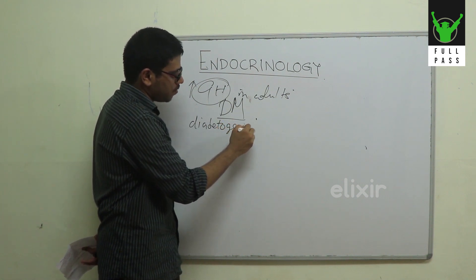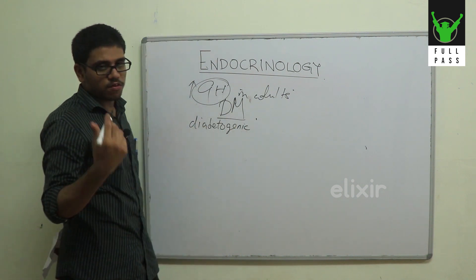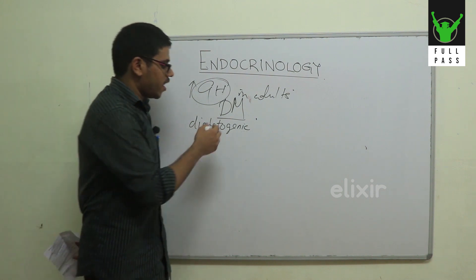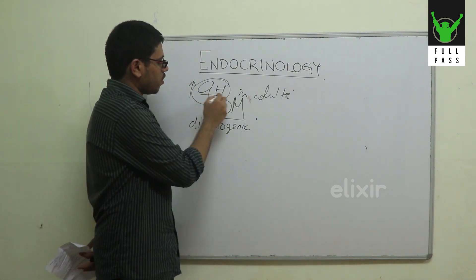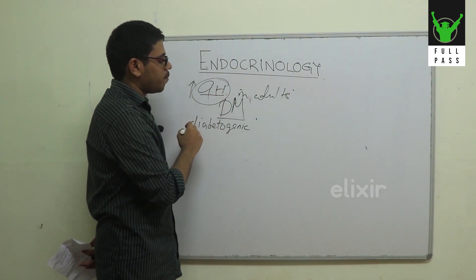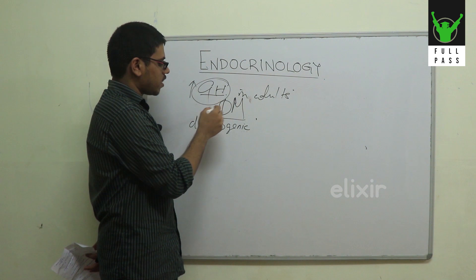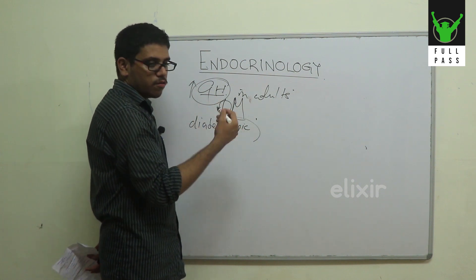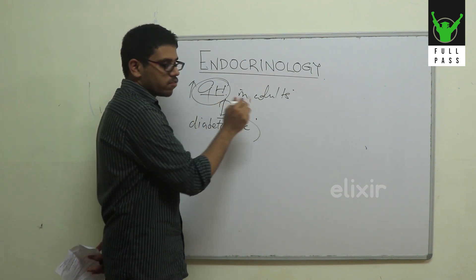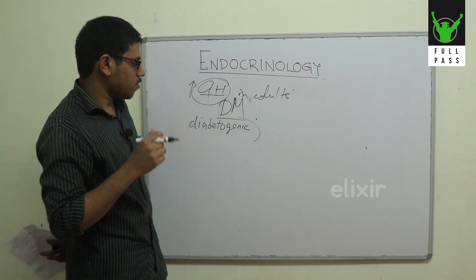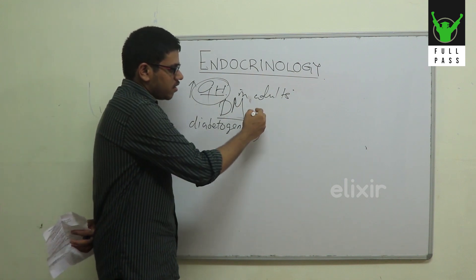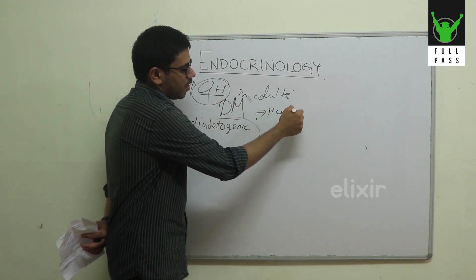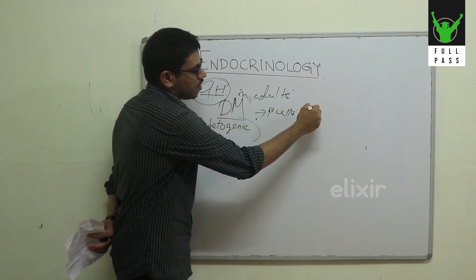Growth hormone raises the blood glucose level. Growth hormone, being called the Diabetogenic Hormone, elevates blood glucose, which stimulates the beta cells of the pancreas, causing insulin release.